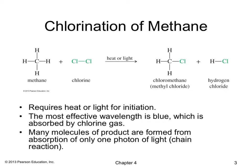The first reaction in this chapter is the chlorination of methane. Methane reacts with chlorine, and in the presence of heat or light — which is required for the reaction to occur — you generate chloromethane and hydrogen chloride. The most effective wavelength for light is blue, which is absorbed by chlorine gas, and many molecules of product are formed from the absorption of only one photon of light.